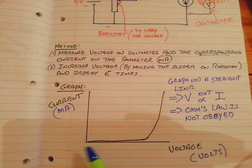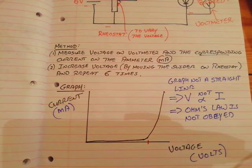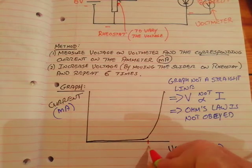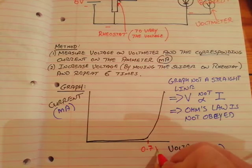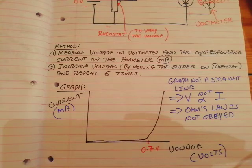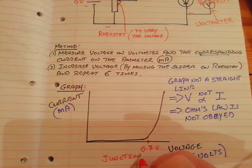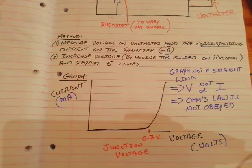You could be asked to plot that graph. There's one other thing to note: that point on the voltage axis where the current starts shooting up. For a lot of diodes that is around 0.7 volts, and that point is known as the junction voltage. The junction voltage is the point where the current really starts shooting up.